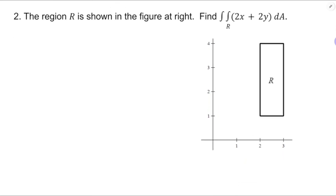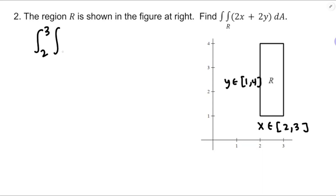Next, we've got a region. Calculate the double integral over R of 2x plus 2y dA, where x is in the interval 2 to 3. This is best case scenario — integrating over a rectangle — and y is going to be between 1 and 4. So a double integral; it doesn't really matter which order I do. I'll do 2 to 3 and then 1 to 4. dA is dx dy or dy dx, and since I did 1 to 4 on the inside and those were y-coordinates, my inside variable of integration needs to be y.